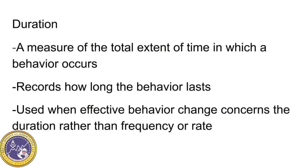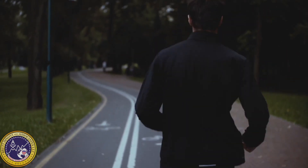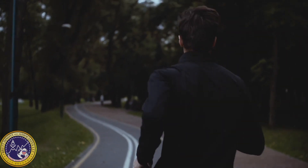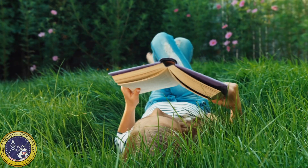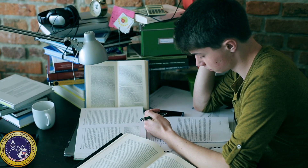Duration is a measure of the total extent of time in which a behavior occurs. It records how long the behavior lasts and it's used when effective behavior change concerns the duration rather than the frequency or rate. Examples include running, attending, reading, and studying.